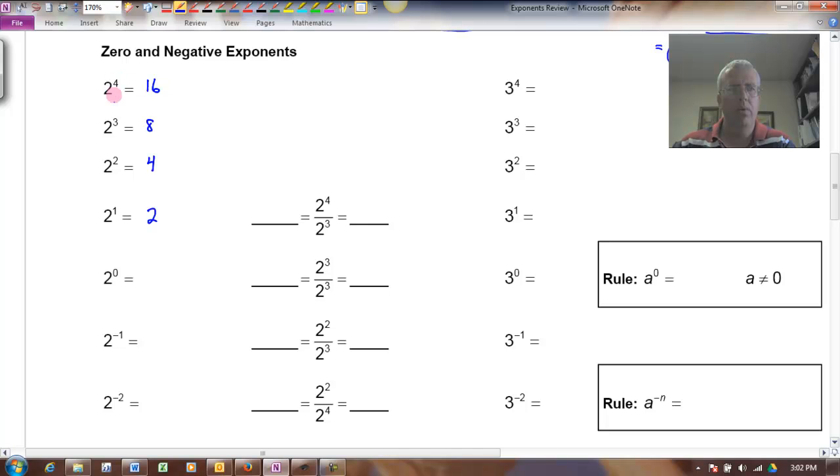When I go from 2 to the fourth to 2 to the third, I'm dividing by 2. 16 divided by 2 is 8, and from 2 cubed to 2 squared, I'm again dividing by 2. 8 divided by 2 is 4, and 4 divided by 2 is 2, and if I take this 2 and divide it by 2, that should give me 1. And so it makes sense if I just follow the pattern that 2 to the zero would be equal to 1.